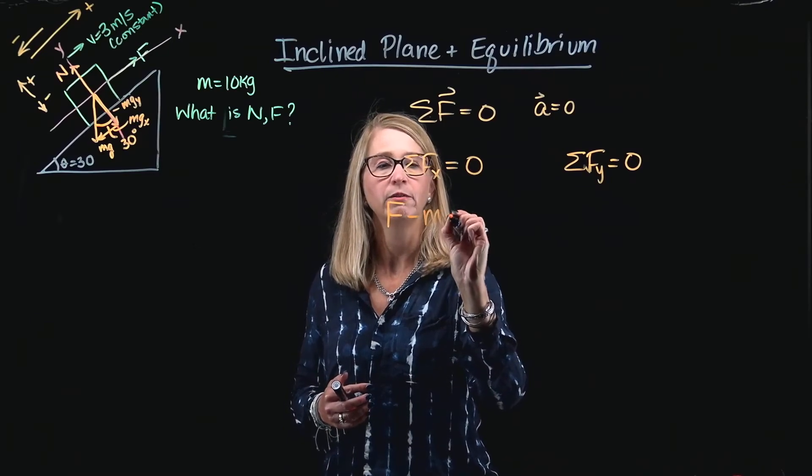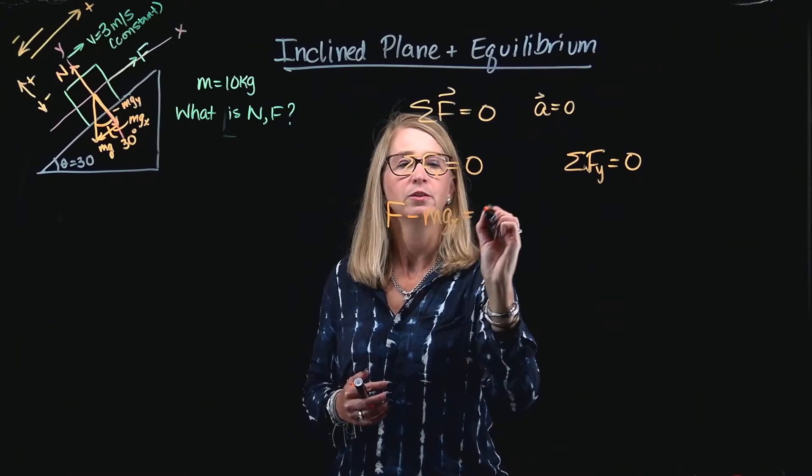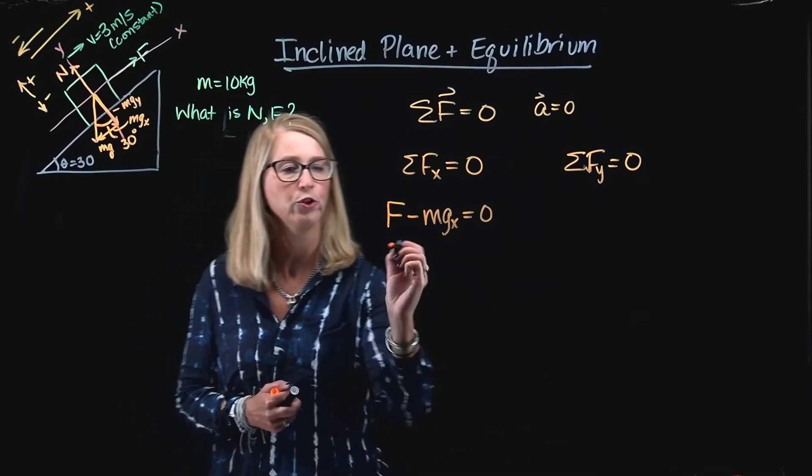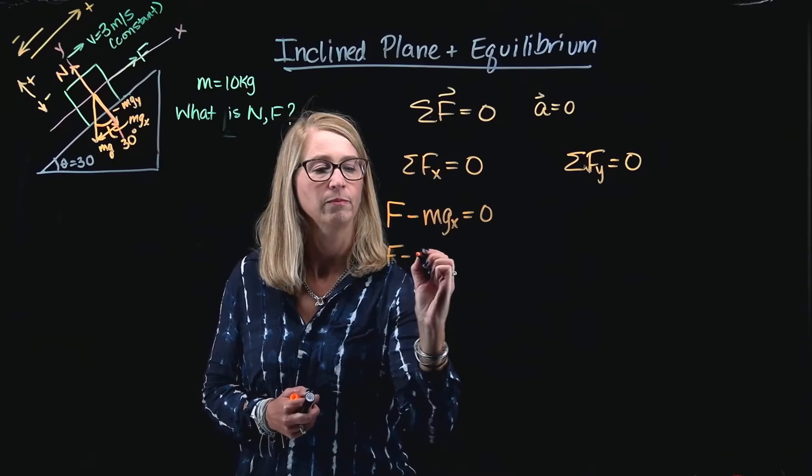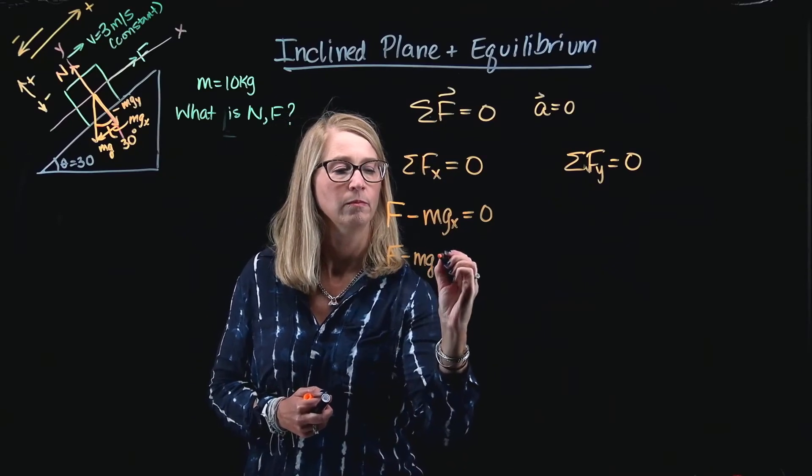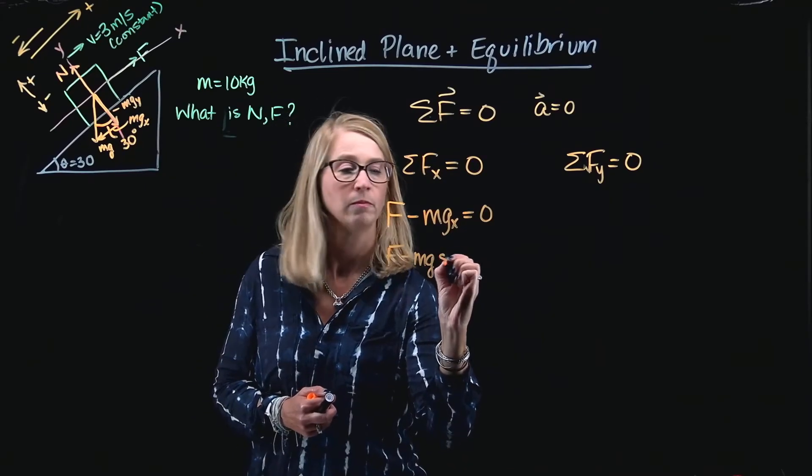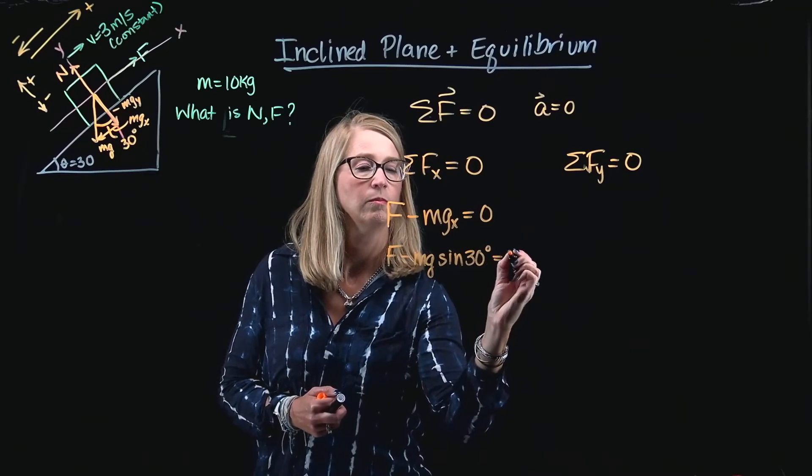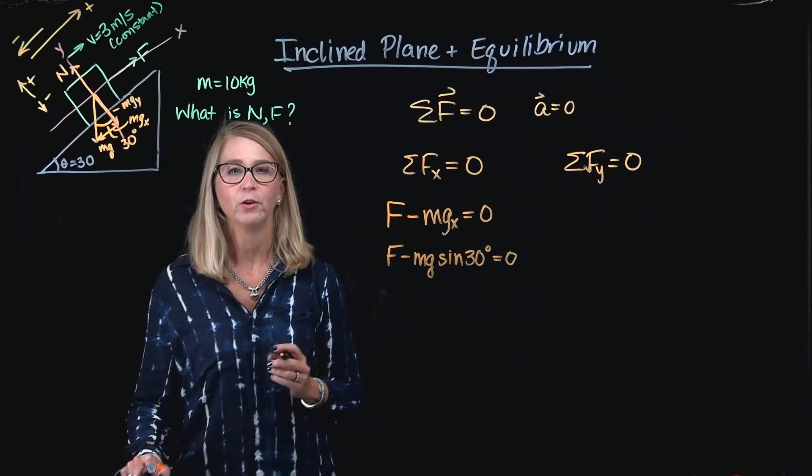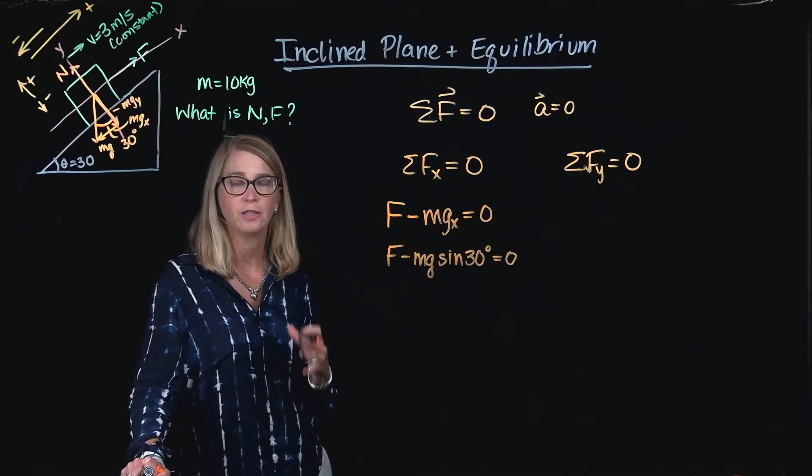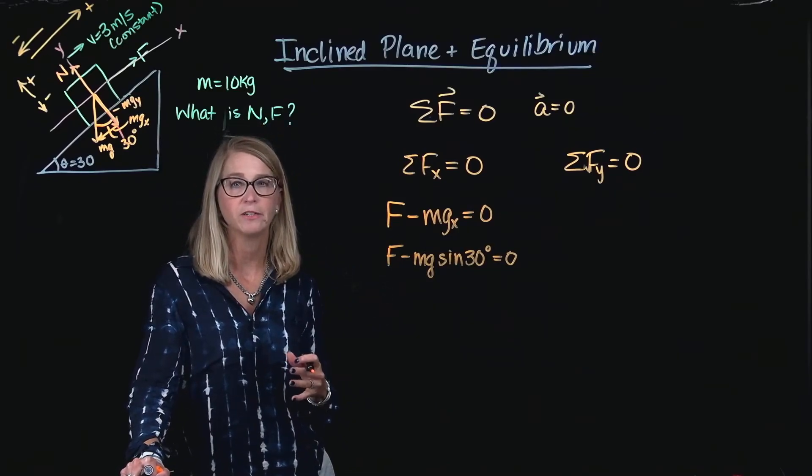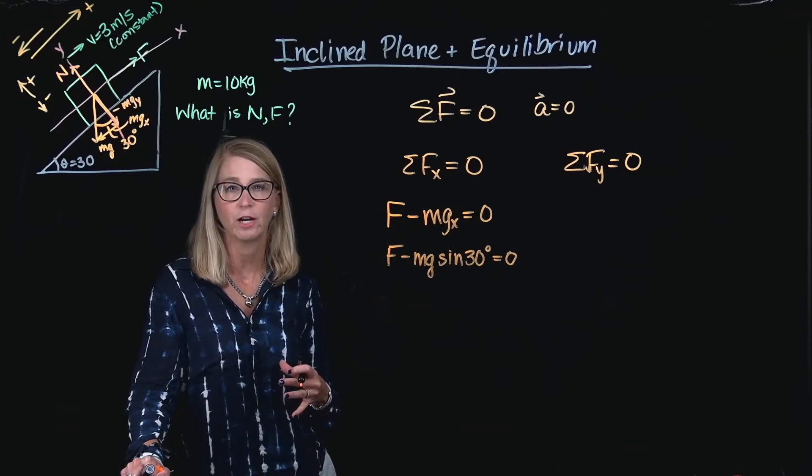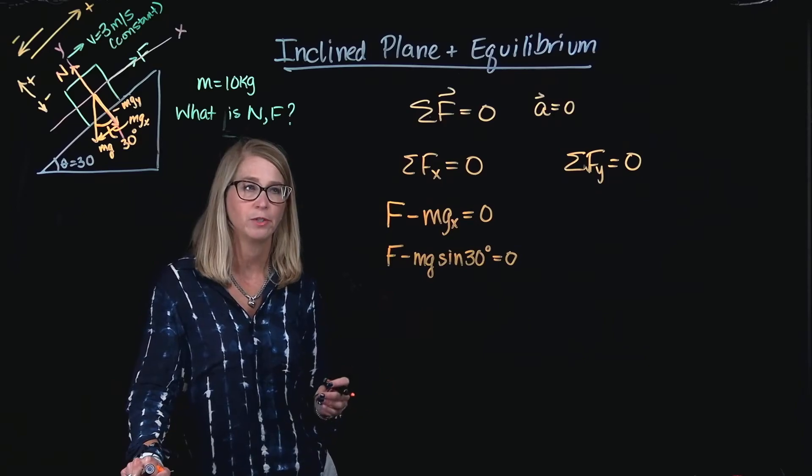And so, I'm just going to write it right here, to do one extra step, so we avoid confusion. F minus mg sine 30 degrees equals zero. And notice that I also indicated that the x component of the weight was negative, because it tends to pull the object down the incline, and that was my negative direction. The force is pulling up the incline.